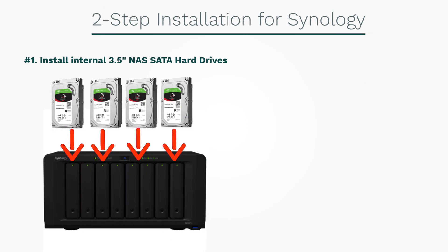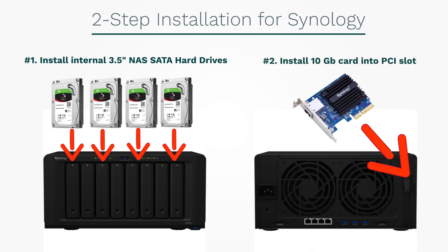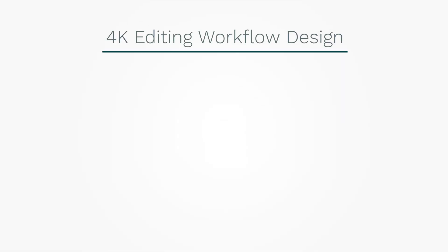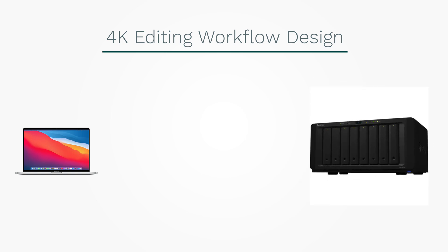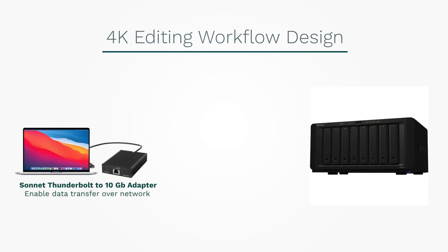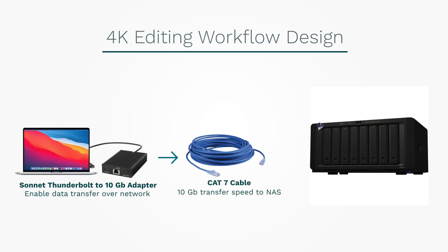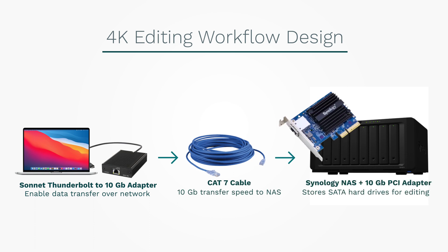Here's our setup. We really have two things to install. We've got to install the hard drives — in this case 16 terabyte, three-and-a-half-inch SATA drives — into our Synology for storage. Then we have to install the 10 gigabit port from Synology into the PCI slot of the disk station so that we can transfer at 10 gigabit speeds. The architecture: we're going from the computer to the Synology using the Sonnet adapter through a CAT 7 cable into the PCI slot, where it's going to write all the data onto our hard drives.